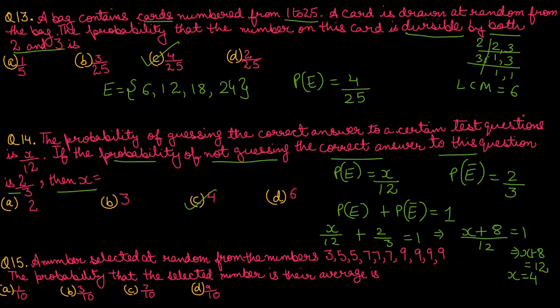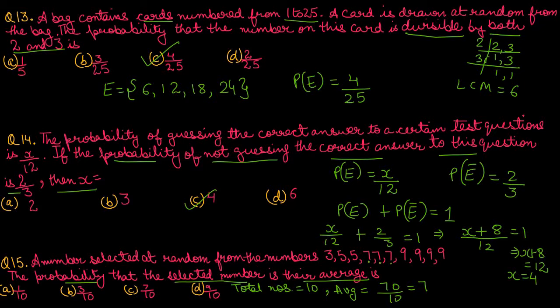Question number 15: A number is selected at random from the numbers 3, 5, 5, 7, 7, 7, 9, 9, 9, 9. We have to find the probability that the selected number is their average. Total numbers are 10, and their sum is 70, so the average is 7. The number 7 appears 3 times in the list. So our required probability is 3 upon 10. Option B is the correct option.